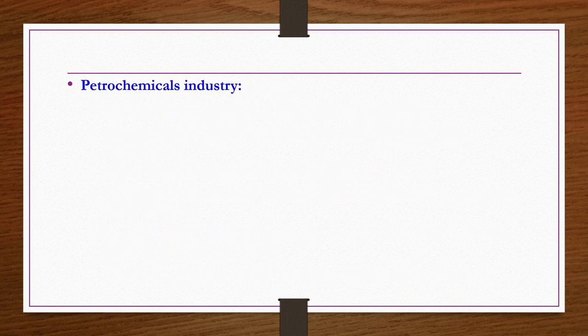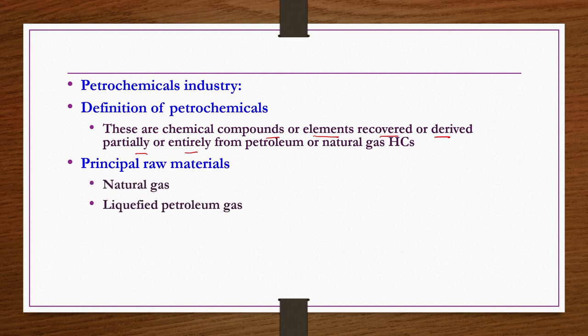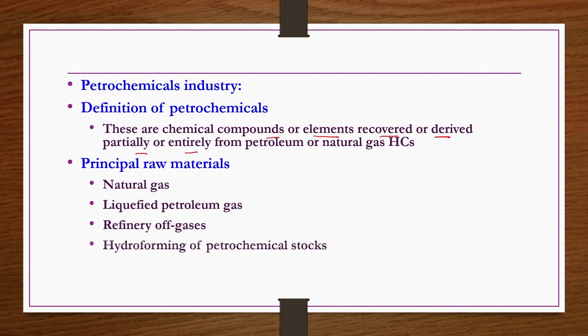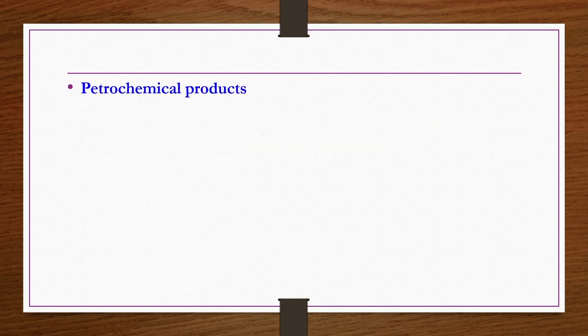Next is the petrochemicals industry. Petrochemicals by definition are chemical compounds or elements recovered or derived either partially or entirely from petroleum or natural gas hydrocarbons. Principal raw materials include natural gas, liquefied petroleum gas, refinery gases, hydroforming of petrochemical stocks, naphtha and fuel oil, and petroleum coke — whatever is obtained from the petroleum refinery may be used as raw material to get different types of petrochemicals.